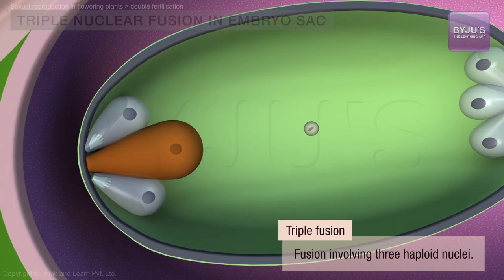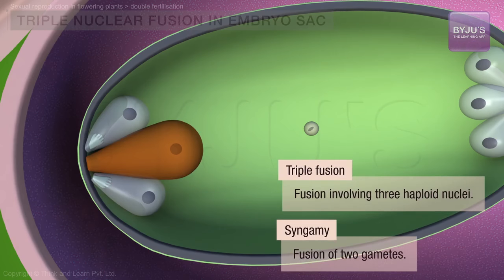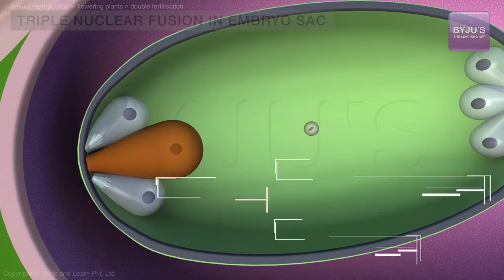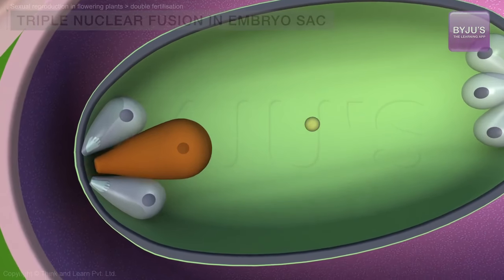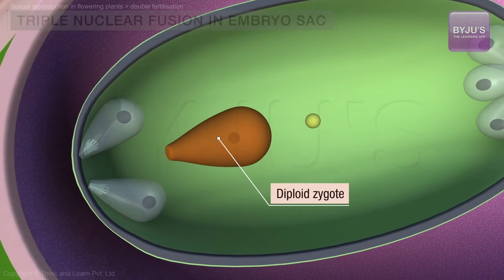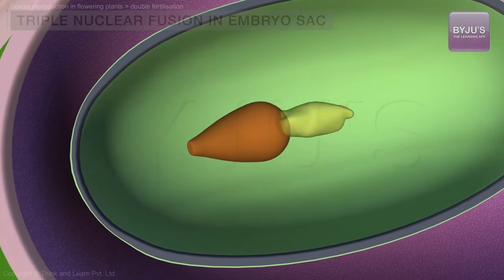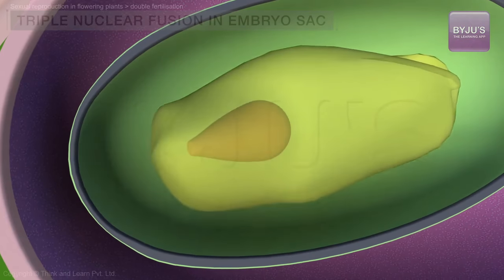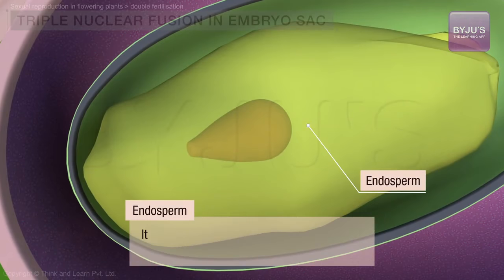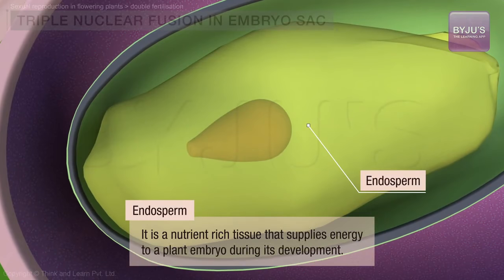These more or less simultaneous events — syngamy and triple fusion — are collectively termed double fertilization, and they are a hallmark of angiosperm reproduction. Fertilization in flowering plants accomplishes two things: one, it creates a diploid zygote which develops into an embryo, and two, it creates a triploid cell, the PEN, which eventually develops into endosperm, a nutrient-rich tissue that supplies energy to a plant embryo during its development.